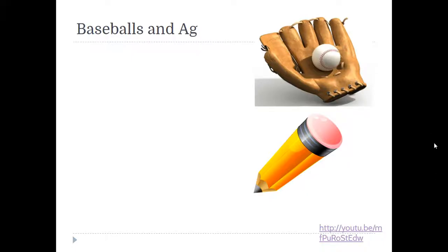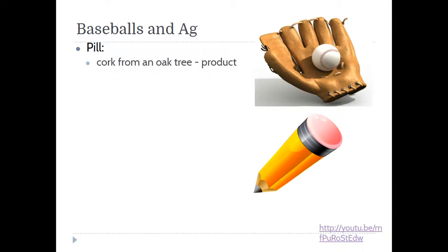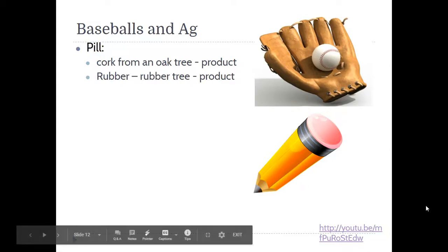Once you've done that, feel free to visit our Products and Byproducts answer in Google Classroom. Note that the very start of the baseball does have a pill, which comes from cork — a product of an oak tree — and rubber, a product of a rubber tree. There's more opportunity to explore the baseball and agriculture connection linked to our assignment.